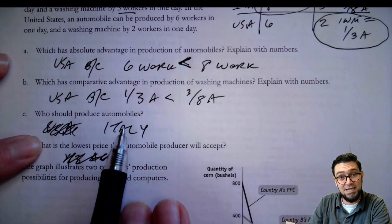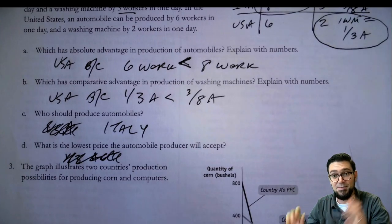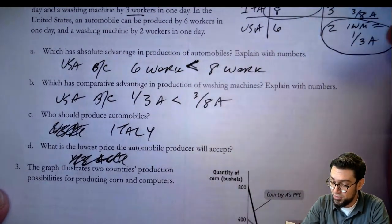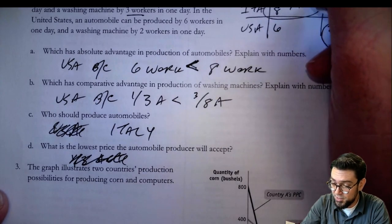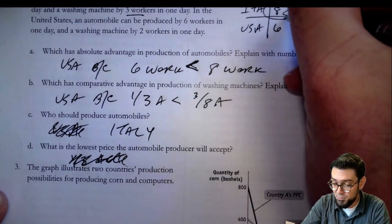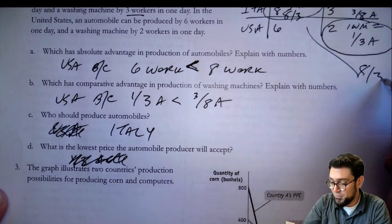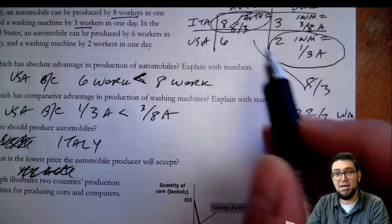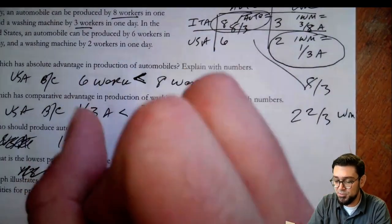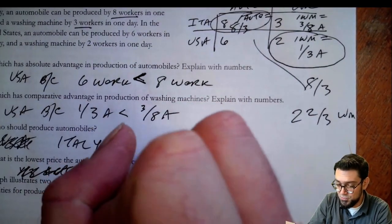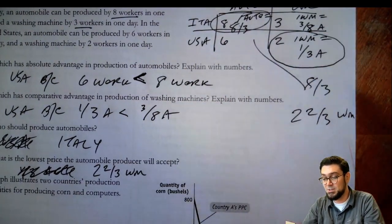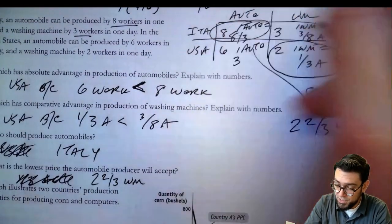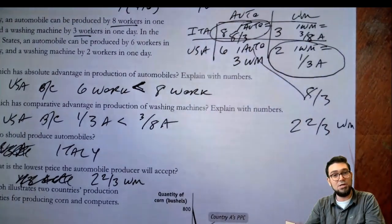If the U.S. has comparative advantage in washing machines, we know that Italy is going to make the other thing — automobiles. Italy's lowest price that they're going to take for their automobiles: one auto is the inside number over — eight over three — which is the same as two and two-thirds of a washing machine. That's the lowest price. The highest price, to finish this off, would be three washing machines. So somewhere in the middle, they would be happy.